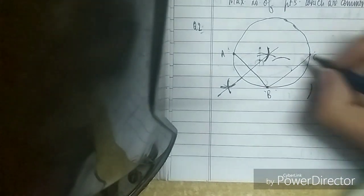Similarly here, I'll open it more than half and put the tip of the compass on B and draw an arc like this, and on C also. And this is the perpendicular bisector.